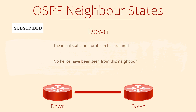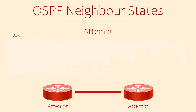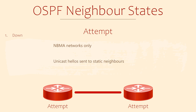We might also see a router in this state if something is wrong — for example, neighbours coming up and then immediately dropping. Next you might see a state called attempt. This only applies to routers with the NBMA network type, so it's not something you will really need to know for the CCNA. Just be aware that it exists. This is where a router has sent a unicast hello packet to an adjacent router. Remember that hellos are usually multicast, but it hasn't seen hello packets from these routers yet.